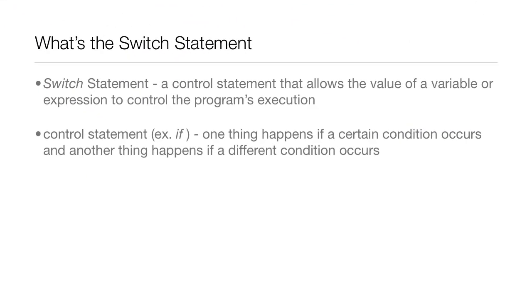Now, what is the switch statement? Well, the switch statement is a control statement that allows the value of a variable or expression to control the program's execution. A refresher on what a control statement is: one thing happens if a certain condition occurs and another thing happens if a different condition occurs. An example of a control statement is the if statement that we went over in Lesson 5 — that was a control statement, and so is the switch statement.